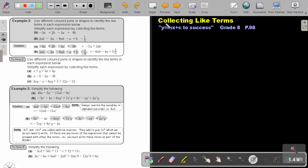Part 2: Collecting like terms. You will find this on page 98 in the Namibia Mathematics Grade 8 textbook Y equals MX plus C to success.